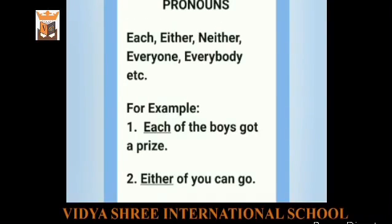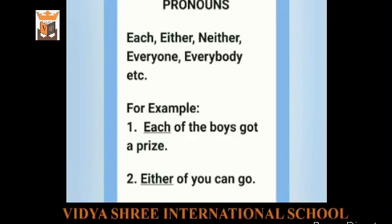The eighth type of pronoun is distributive pronoun. The pronouns which refer to persons or things taken one at a time are called distributive pronouns — they indicate one person or one thing at a time. They include either, neither, everyone, everybody, etc. For example, 'Each of the boys got a prize.' 'Either of you can go' — only one of you can go. In these examples, each and either are distributive pronouns.